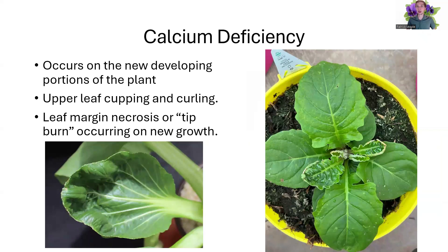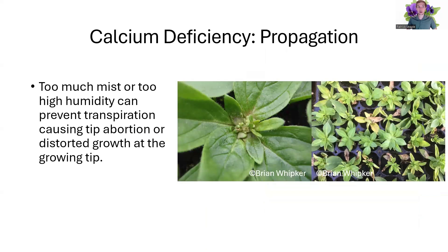What does calcium deficiency look like? It occurs on the new developing portions of the plant — those new leaves first expanding, or fruit or flower tips. We also see this as marginal necrosis or tip burn occurring on new growth. Shown here, you see that leaf edge crinkling and not fully expanding. That lower foliage looks nice and healthy; it's only on that new developing portion. We see this a lot in propagation — too much mist or high humidity can prevent transpiration, so even if calcium is being supplied through fertilizer, we need to be sure our environment matches plant uptake.